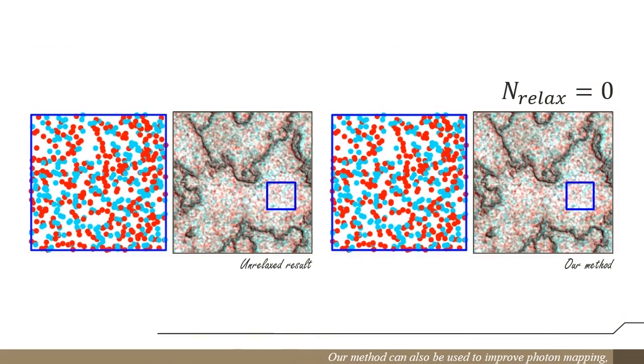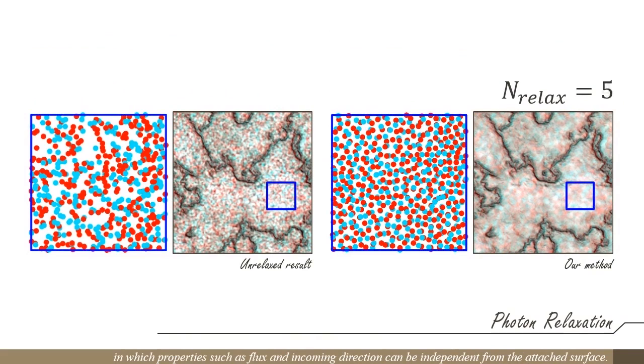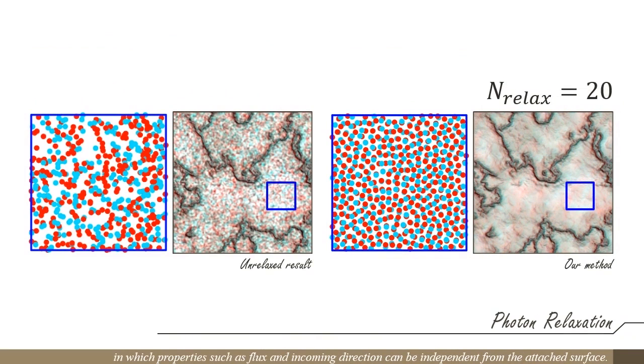Our method can also be used to improve photon mapping, in which properties such as flux and incoming direction can be independent from the attached surface. Our method can reduce the noise and bias of photon density estimation by enabling more uniform distributions of photons with similar properties.